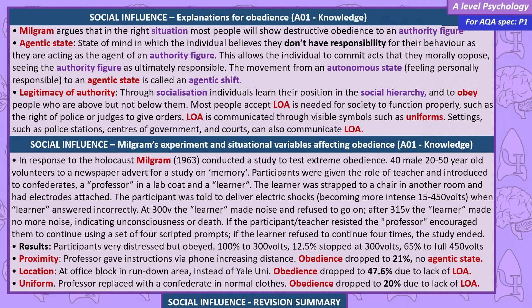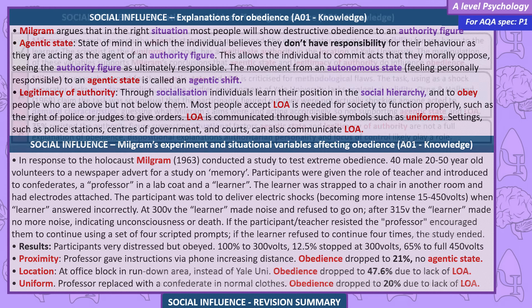Results: participants were very distressed but obeyed — 100% continued to 300 volts, 12.5% stopped at 300 volts, and 65% continued to the full 450 volts. Proximity variation: when the professor gave instructions via phone, increasing distance, obedience dropped to 21% — no agentic state. Location variation: at an office block in a rundown area instead of Yale University, obedience dropped to 47.6% due to lack of legitimacy of authority. Uniform variation: when the professor was replaced by a confederate in normal clothes, obedience dropped to 20%, again due to lack of legitimacy of authority.